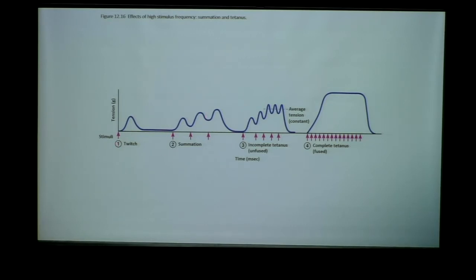With summation, there is not full relaxation in between muscle contractions. The cytoplasm already has some calcium in it — we're not starting from zero. That is the basis of summation: the muscle has not fully relaxed in between, so when we fire a subsequent action potential, we'll naturally generate more force.